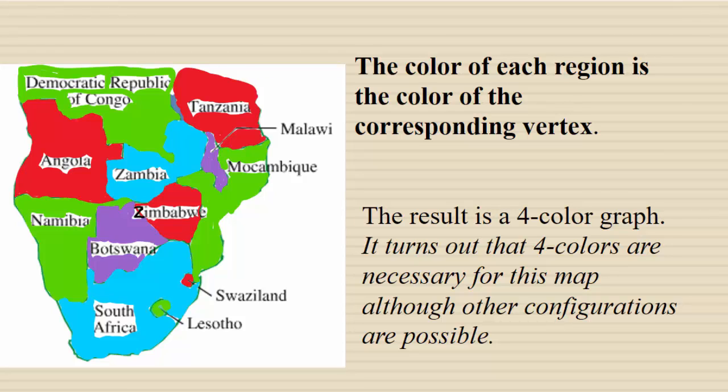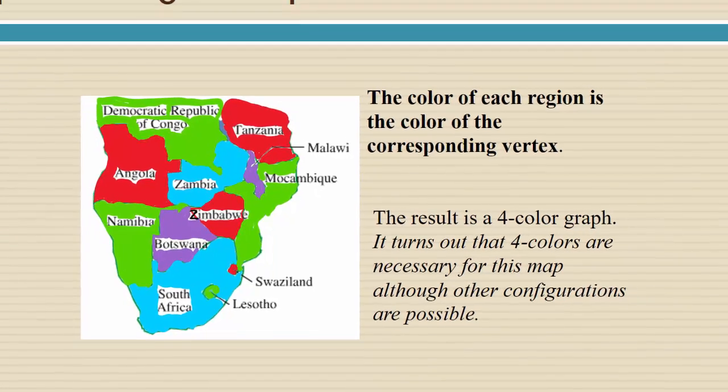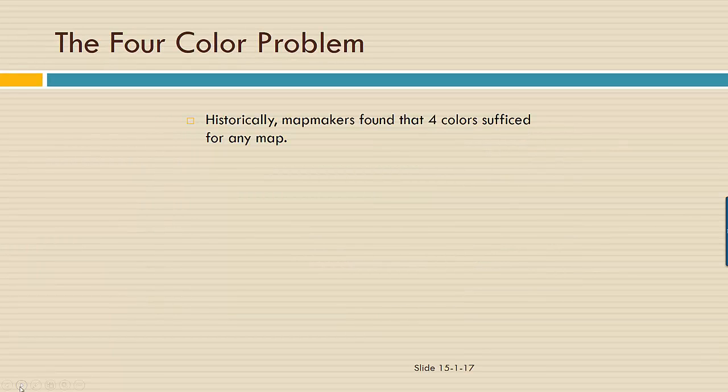Other configurations are possible, but you'll find if you experiment that there is no way to color this map with fewer than four colors such that you avoid having two regions that are adjacent with the same color. This is related to what's known as the four color problem.